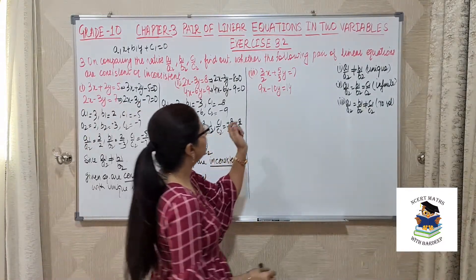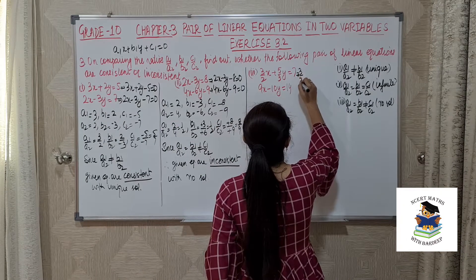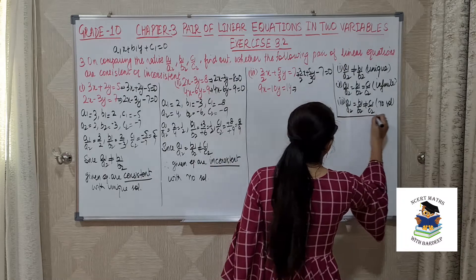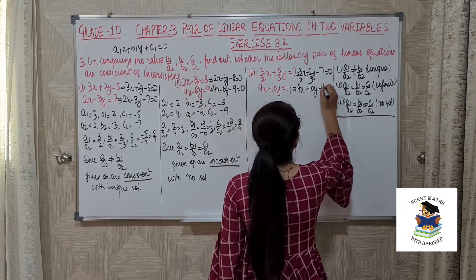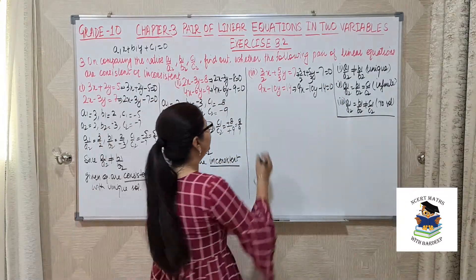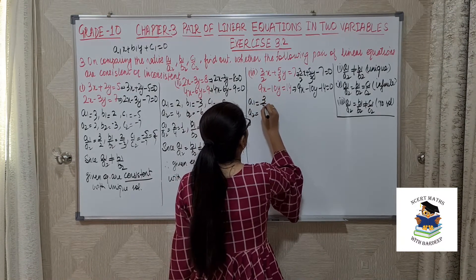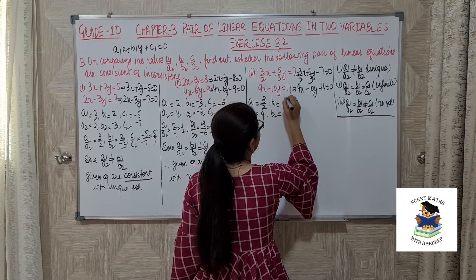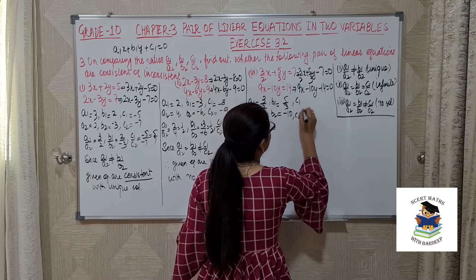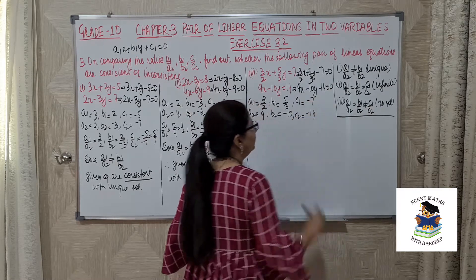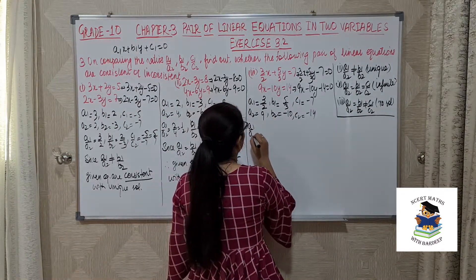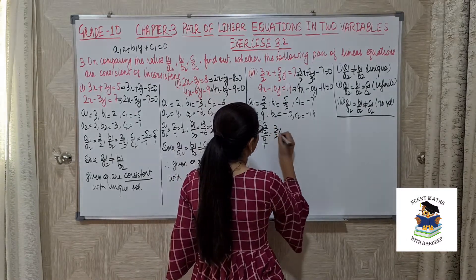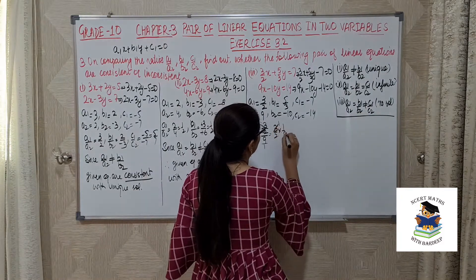For the third part, the right-hand side is again not 0. So we get (3/2)x + (5/3)y − 7 = 0, and the second equation is 9x − 10y − 14 = 0. Don't hesitate if the coefficients are in fraction form — you will still get the answer simply. The values of c1 and c2 are −7 and −14. Now find a1/a2: this is (3/2) divided by 9, which equals (3/2) × (1/9) = 1/6.